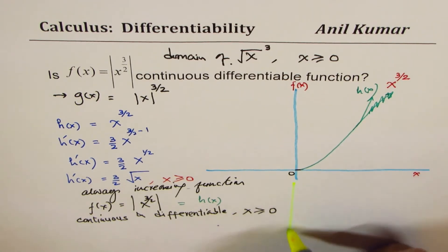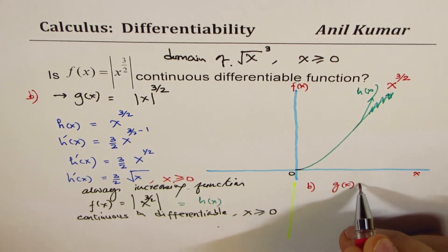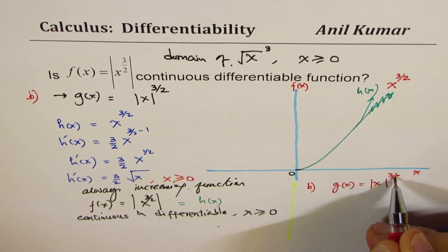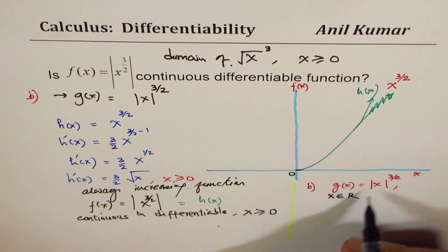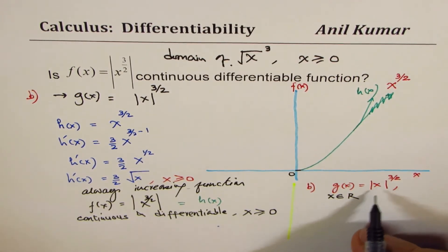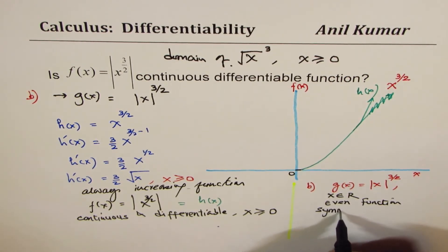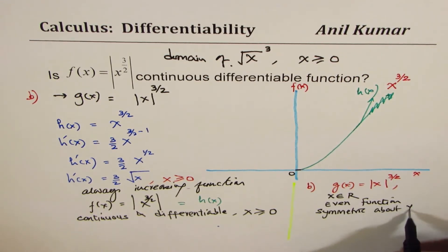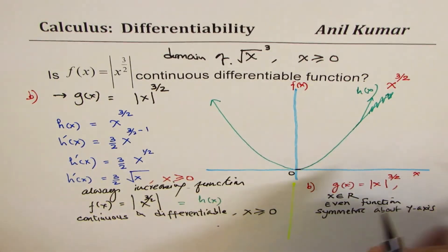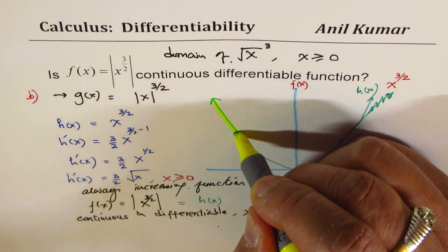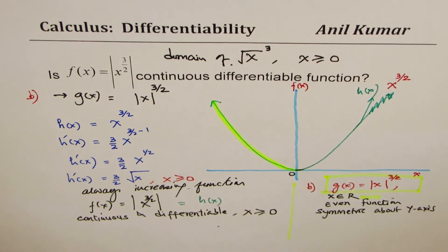Now we'll consider the other function, g of x. Let's call this part B. G of x is absolute value of x, to the power of 3 over 2. When we have absolute value of x, the domain is all real numbers — x belongs to real numbers. We also know it's an even function, which means it is symmetric about the y-axis. So I could sketch this as a curve that is a reflection, and the domain of g of x includes all real numbers.